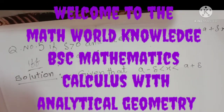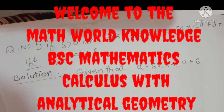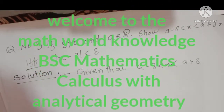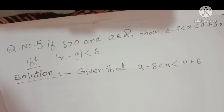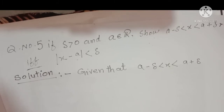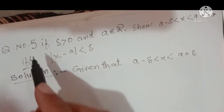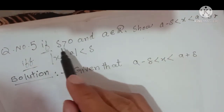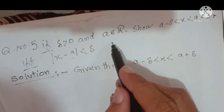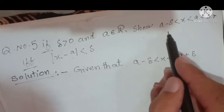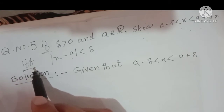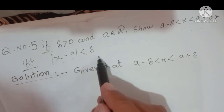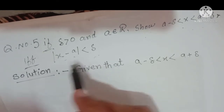Bismillah. Assalamu Alaikum dear students, welcome to the Math World Knowledge. Today we start BSc Mathematics Part One, Calculus with Analytical Geometry, Chapter 1, Exercise 1.1, Question 5 — a most important examination question. Given delta > 0 and a ∈ ℝ, show that a minus delta < x < a plus delta if and only if |x minus a| < delta.